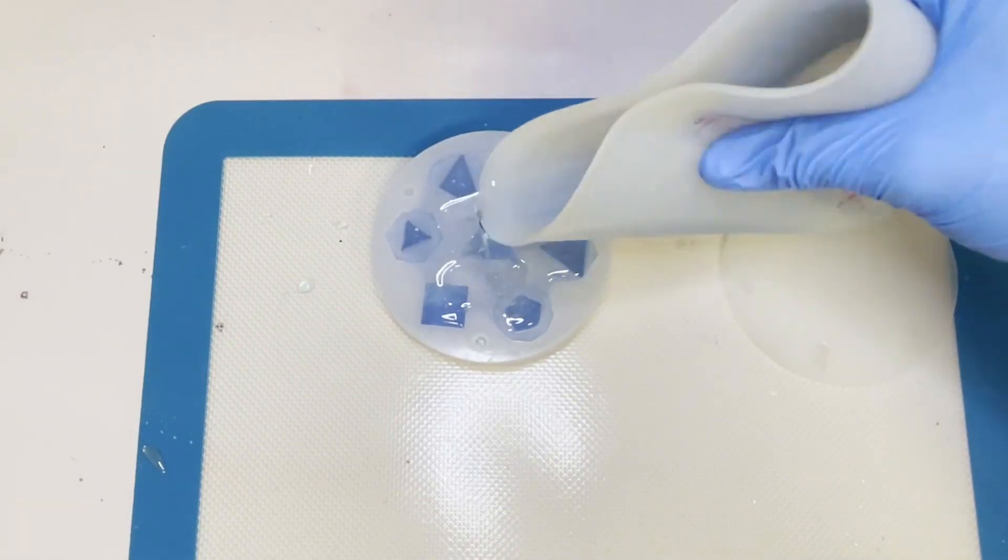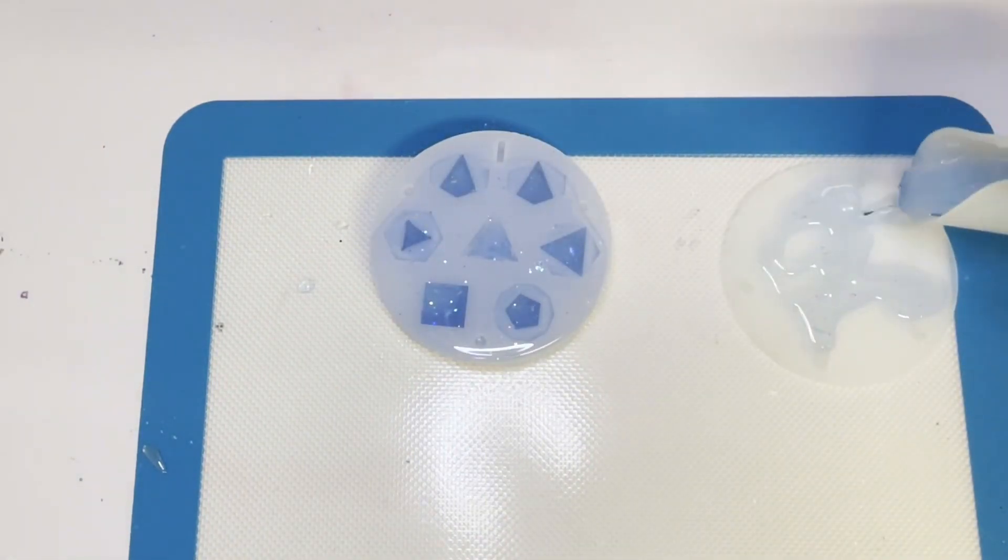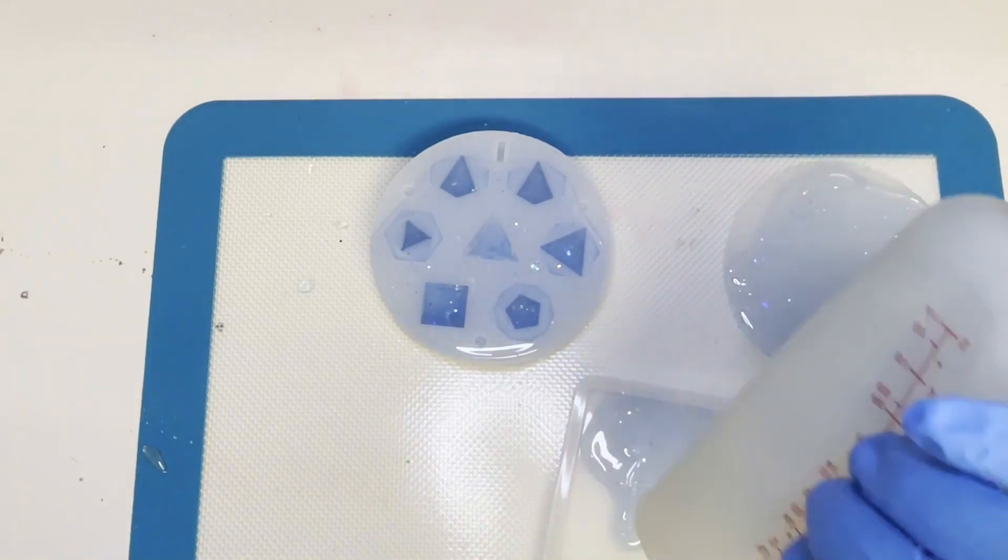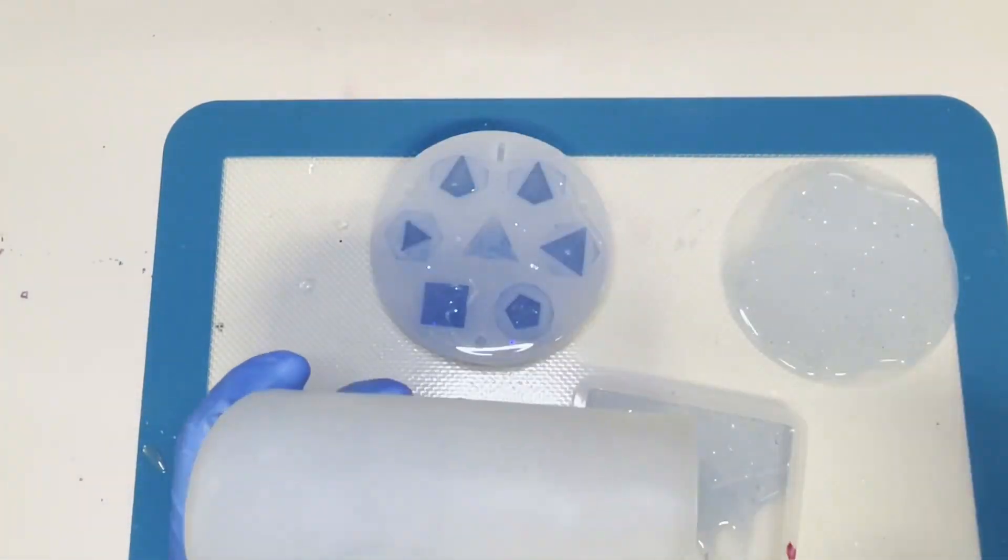Now to pour some more resin on top of the actual mold itself or the lid I should say. And let's just dump the rest of it into this coaster mold here that I wanted to clean.